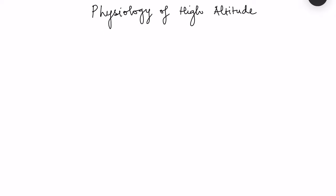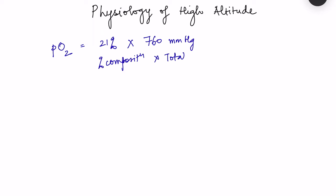According to Dalton's law, the partial pressure of any gas is determined by the percentage composition of that gas in a mixture of gases. When we calculate the partial pressure of oxygen in atmospheric air, we know that the percentage composition of oxygen is around 21%, and we multiply this by the total atmospheric pressure, which at sea level is 760 mmHg. So it is given by: percentage composition of the gas multiplied by the total atmospheric pressure.